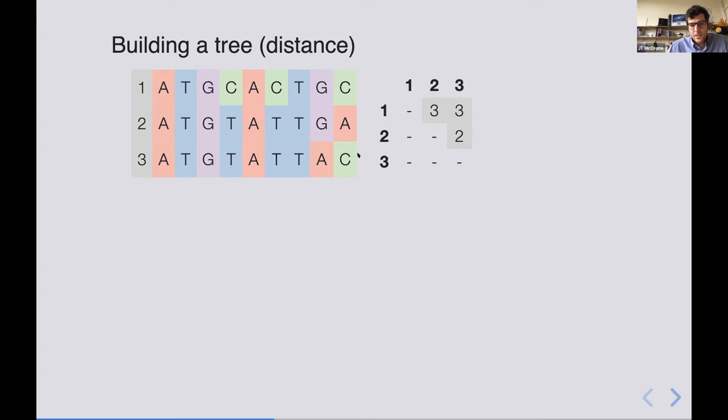And so we can build a tree to represent the relationship between these samples. Now since there's only three, it's a trivial tree, the topology here is very straightforward, but we want to have branch lengths here that represent the genetic distance because that's a representation of what we have in the sequence alignment. And so if we compare, right, the distance between one and three, we want this length here to be as close to three as we can.